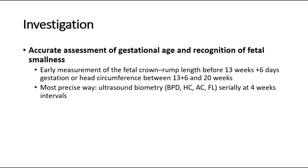For investigation of fetal growth restriction, the detection of a small for gestational age infant involves two elements: first, accurate assessment of gestational age, and second, recognition of fetal smallness. An early measurement of the fetal crown-rump length before 13 weeks plus 6 days gestation, or an early measurement of head circumference between 13 weeks plus 6 days and 20 weeks, is the method of choice for confirming gestational age.